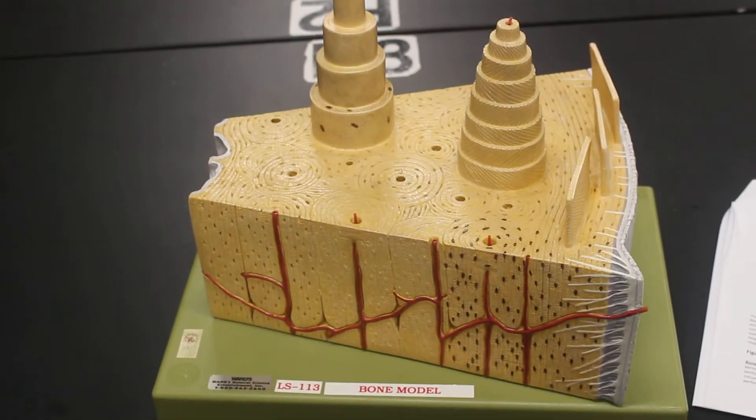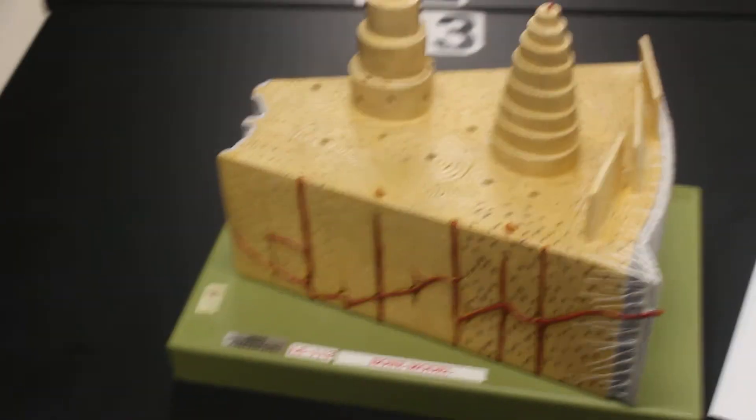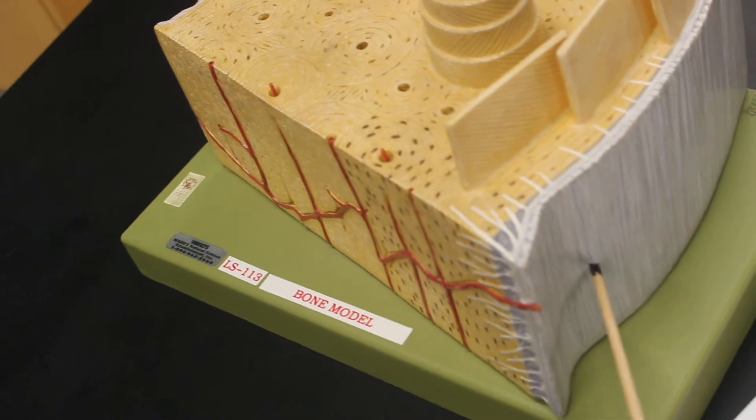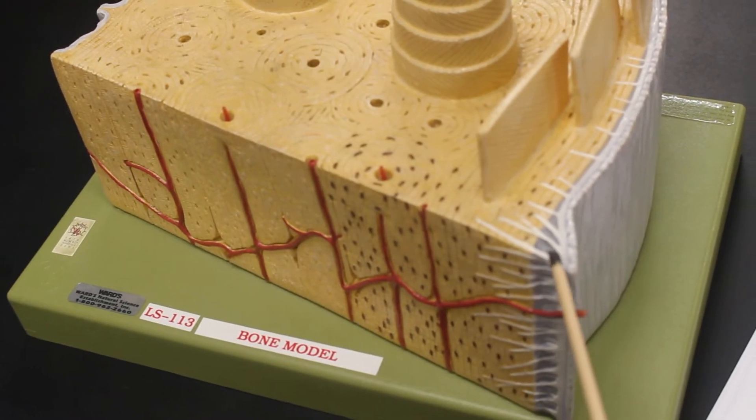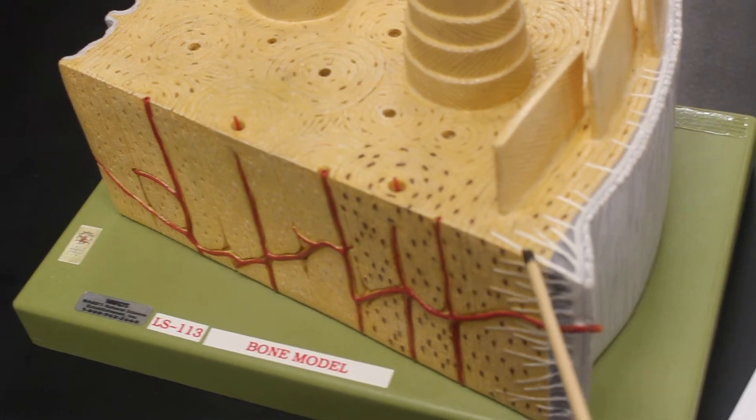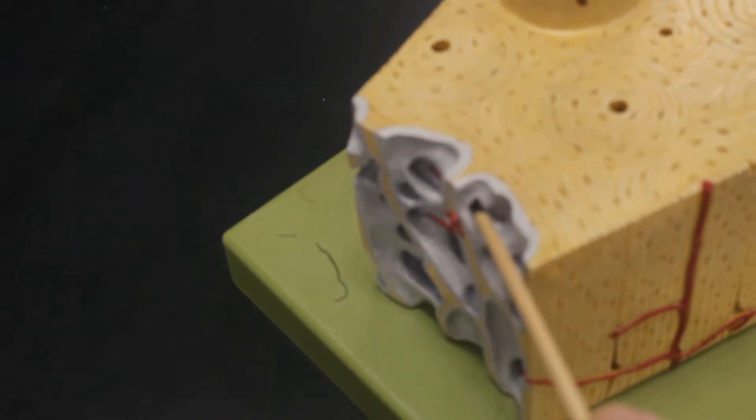This is the bone wedge model. On the bone wedge model we have on the outside the periosteum. Periosteum is connected to the bone tissue by these white structures called perforating fibers, and then on the inside that grayish material is the endosteum.